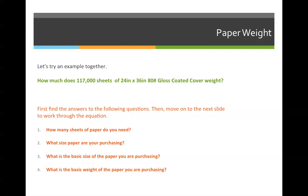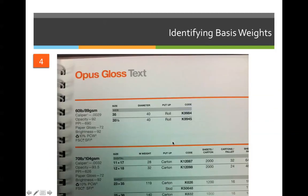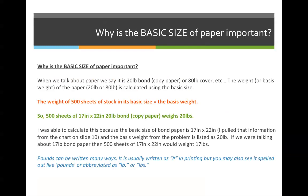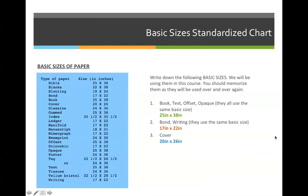Three, what is the basic size of the paper you are purchasing? The basic size of every cover weight stock, no matter what it says in front of it, is always 20 by 26. And I can pull that off of the previous slide where we identified a list of basic sizes. This right here should be in your notes. You should memorize it. You'll be using it every class from now to the end of the semester.